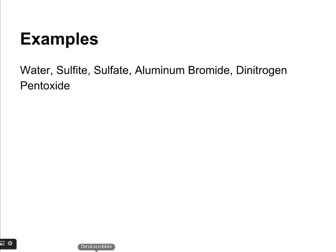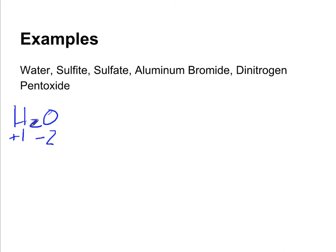Let's look at some examples and assign oxidation numbers. In water, our rule says oxygen is always minus two, so the oxidation state of oxygen is minus two. Hydrogen is bonded to a non-metal, so it's plus one. There are two hydrogens, but since there's no charge on water they cancel out and each hydrogen has an oxidation state of plus one. Whenever you're asked for the oxidation state of an element, it refers to one atom of that element — so hydrogen is plus one, not added together.